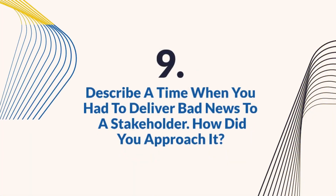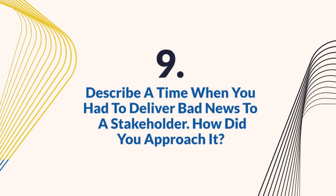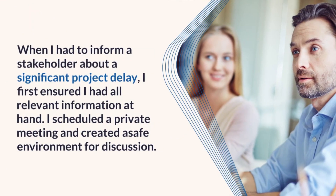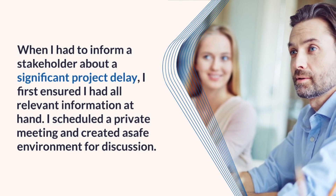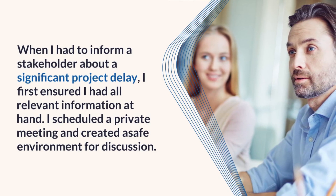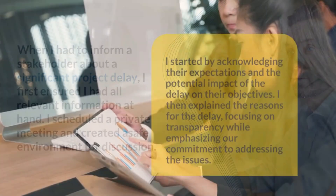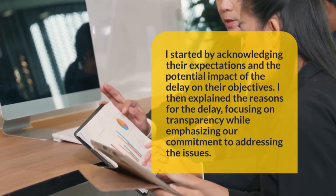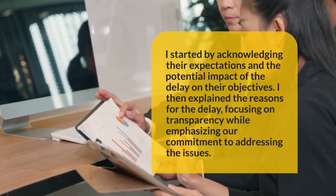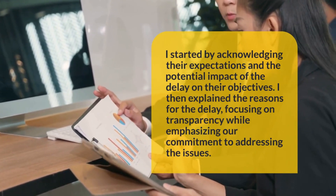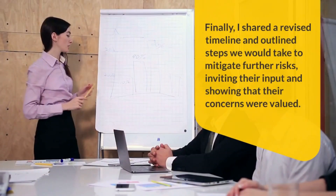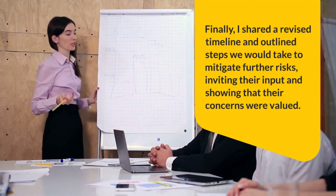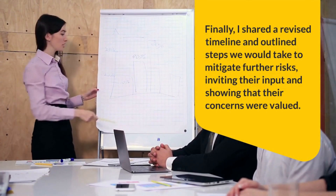Question 9: Describe a time when you had to deliver bad news to a stakeholder. How did you approach it? When I had to inform a stakeholder about a significant project delay, I first ensured I had all relevant information at hand. I scheduled a private meeting and created a safe environment for discussion. I started by acknowledging their expectations and the potential impact of the delay on their objectives. I then explained the reasons for the delay, focusing on transparency while emphasizing our commitment to addressing the issues. Finally, I shared a revised timeline and outlined steps we would take to mitigate further risks, inviting their input and showing that their concerns were valued.